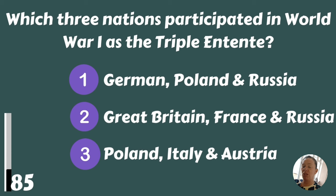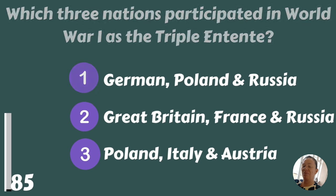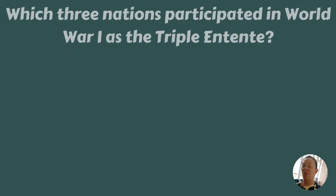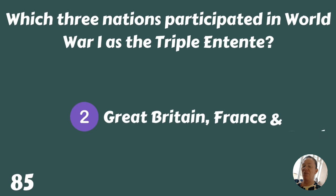Which three nations participated in World War I as the Triple Entente — Germany, Poland and Russia; Britain, France and Russia; or Poland, Italy and Austria? Britain, France and Russia.